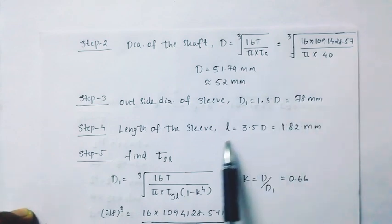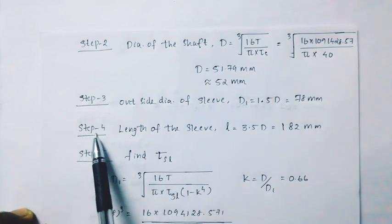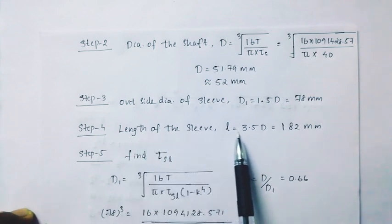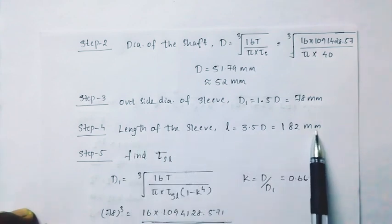Step 4: Length of the muff. L = 3.5d, which gives 182mm.